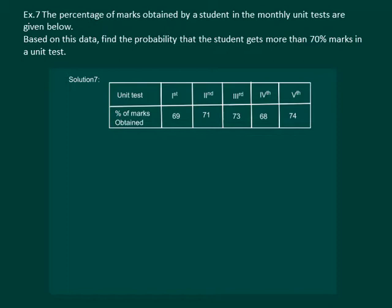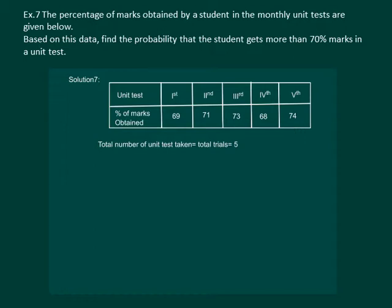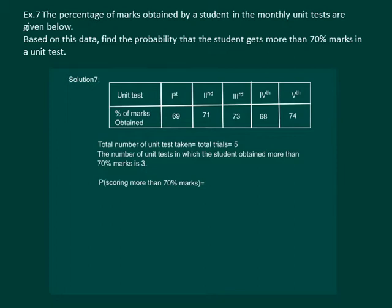Let us read the question. The percentage of marks obtained by a student in the monthly unit tests are given in the table. Based on this data, find the probability that the student gets more than 70% marks in a unit test. Here, the total number of unit tests held is 5. Out of these 5 unit tests, the number of unit tests in which the student obtained more than 70% marks are 3. So the probability of the student scoring more than 70% marks will be 3 by 5, which is equal to 0.6.